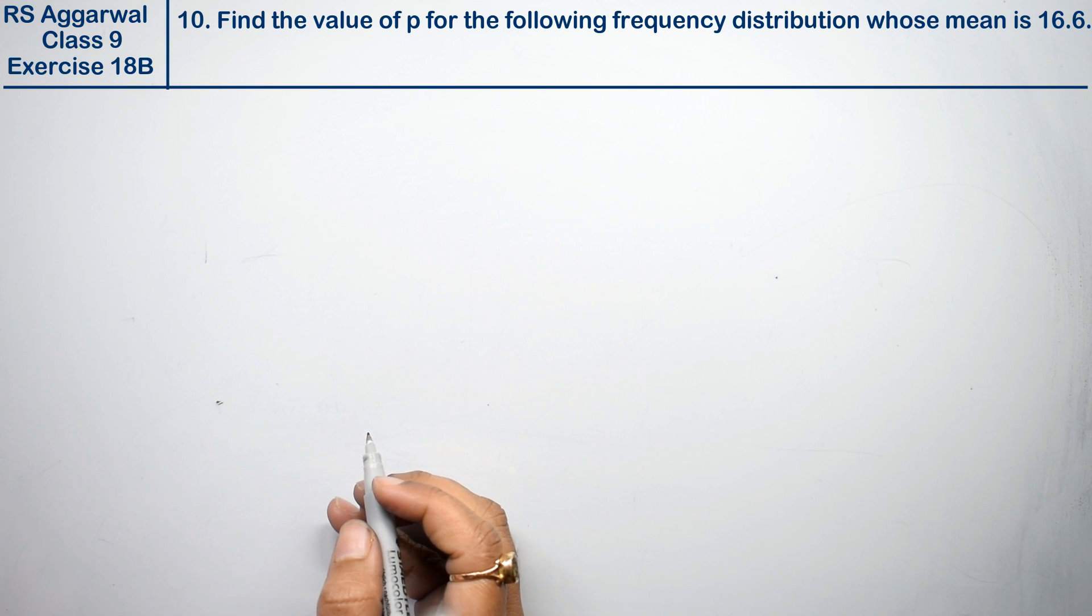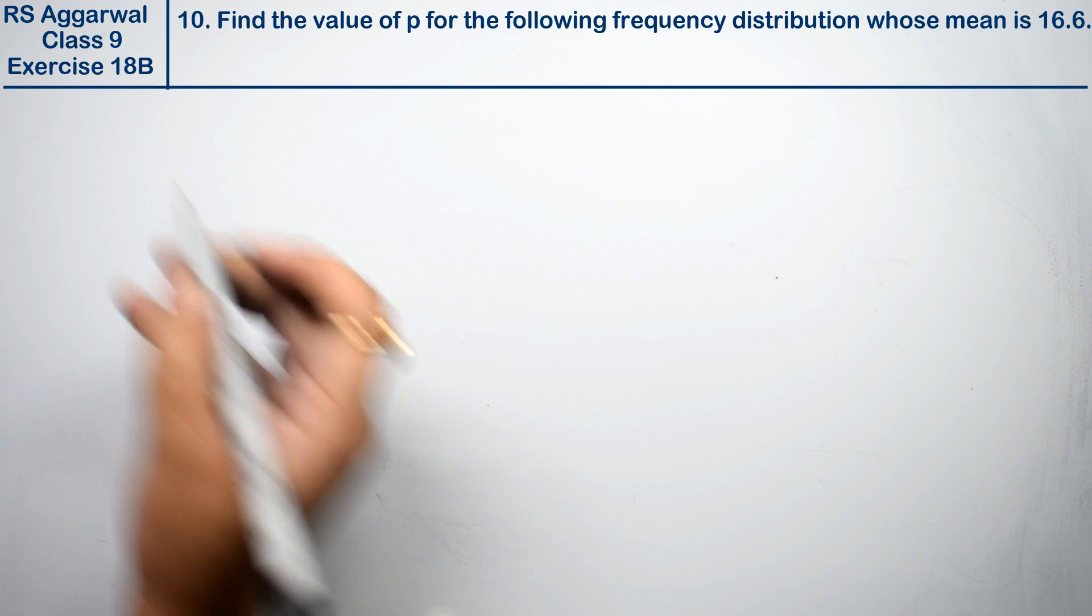Let's do question number 10 of exercise 18B: mean, median and mode of ungrouped data. Find the value of p for the following frequency distribution whose mean is 16.6.